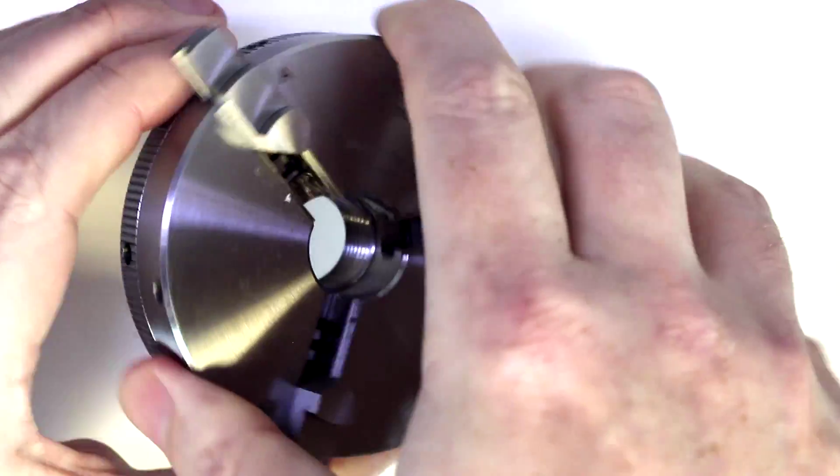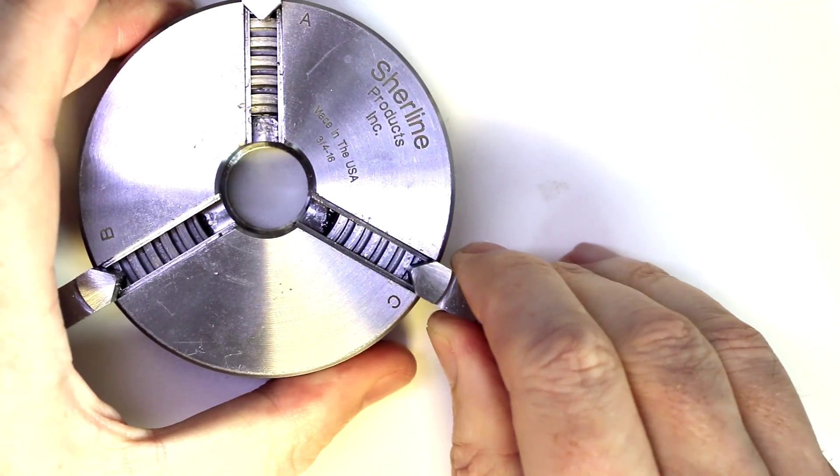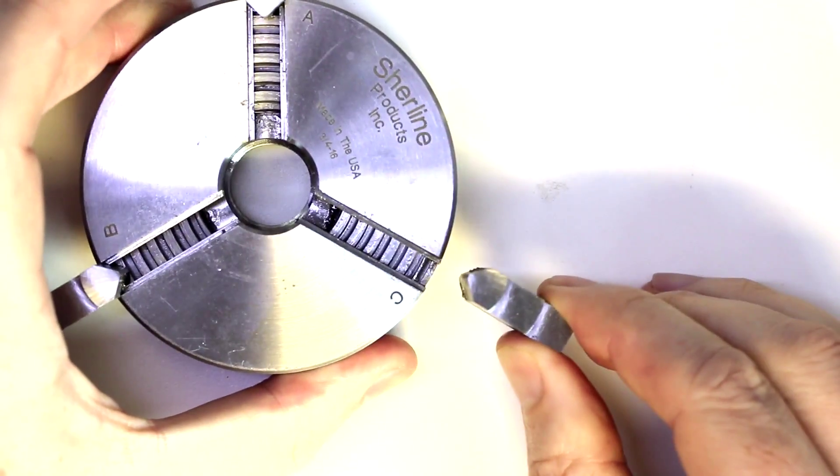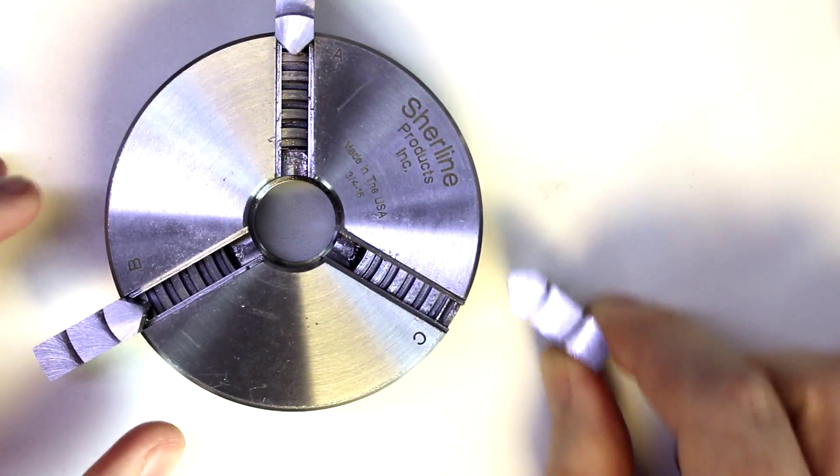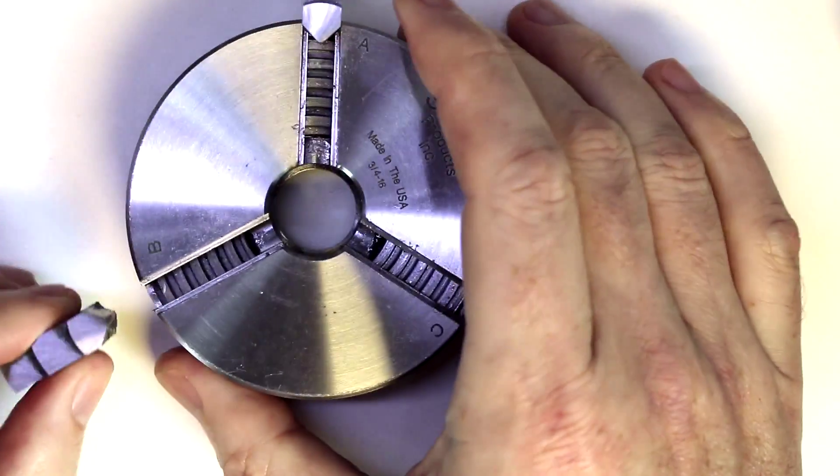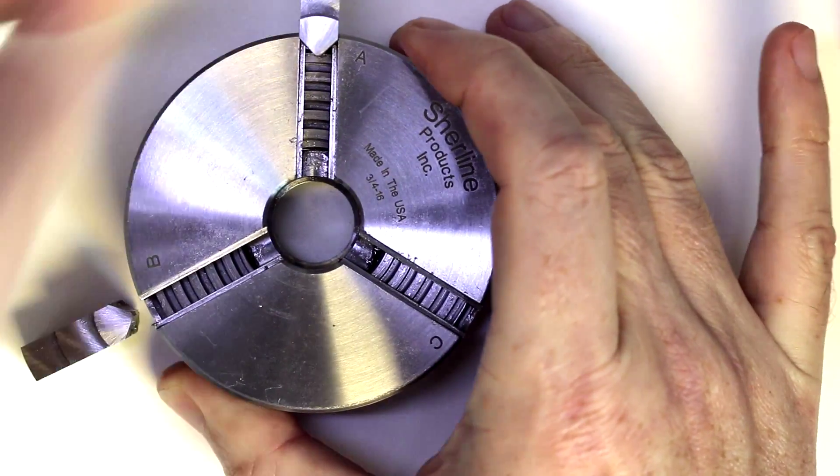Now the jaws can come out if we keep moving this out. The jaws will eventually disengage from that scroll, and they will disengage one at a time. So that one is out, that one is out, that one is still held in.